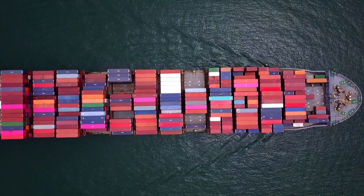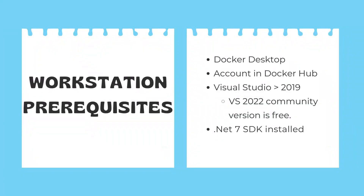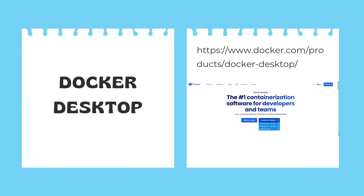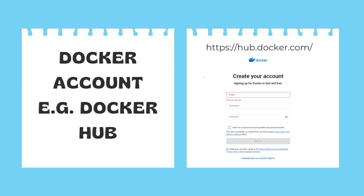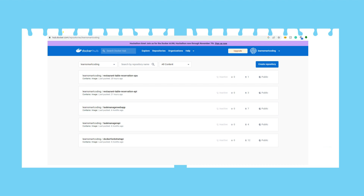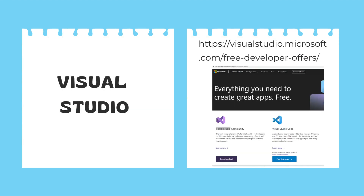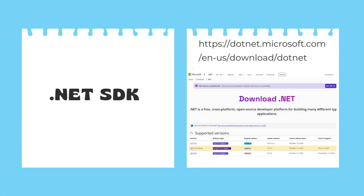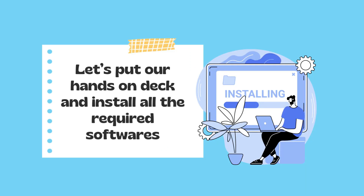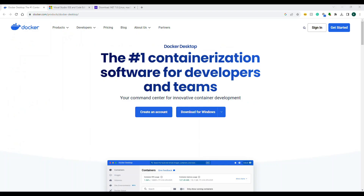It's time to set up our local machine. We need to install Docker Desktop — go to the website, get the download, and log into hub.docker.com. If you don't have an account, just register. Then we will install Visual Studio Community 2022 — minimum version 2019 — and finally install .NET SDK 7.